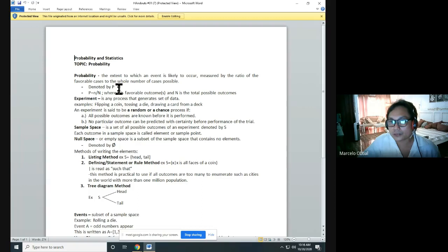So probability is the extent to which an event is likely to occur, measured by the ratio of the favorable cases to the number of cases possible. It is usually denoted by letter P, capital P. It has general formula of small n over capital N, where n is favorable outcomes and capital N is the total possible outcomes.